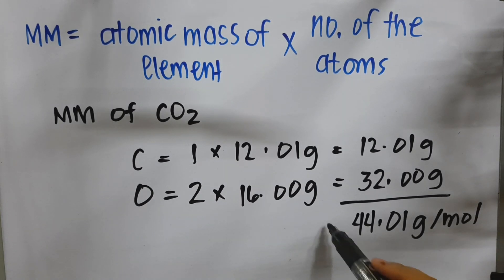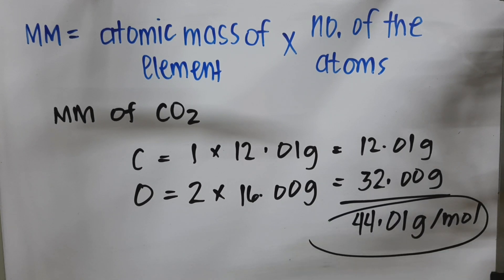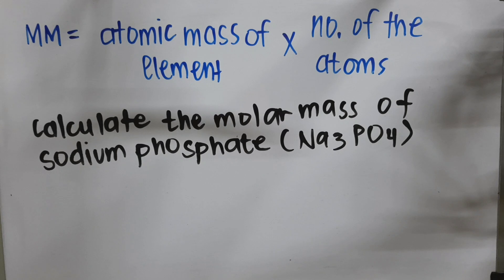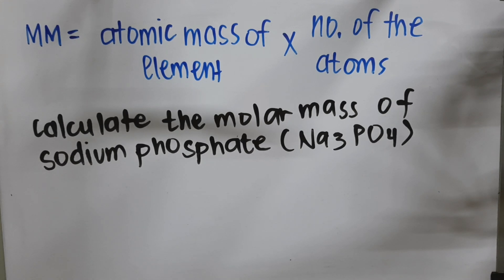So 44.01 grams per mole is our molar mass for carbon dioxide. For example number 2, calculate the molar mass of sodium phosphate, or Na₃PO₄.